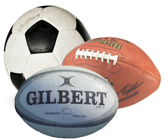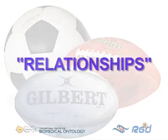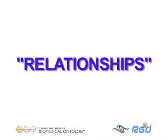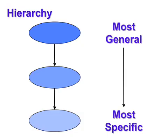So then, what does it mean to say that ontology terms have relationships? Basically, an ontology is constructed as a hierarchy, with the term at the top being the most general, and the ones at the bottom the most specific.